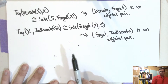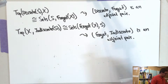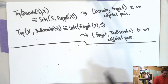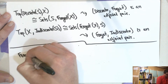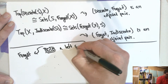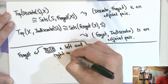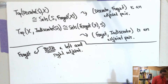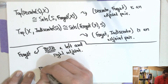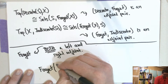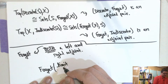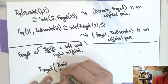Indiscrete is the right adjoint of forget, and indiscrete is the left adjoint of forget. They're adjoint pairs. So forget is both a left and right adjoint.